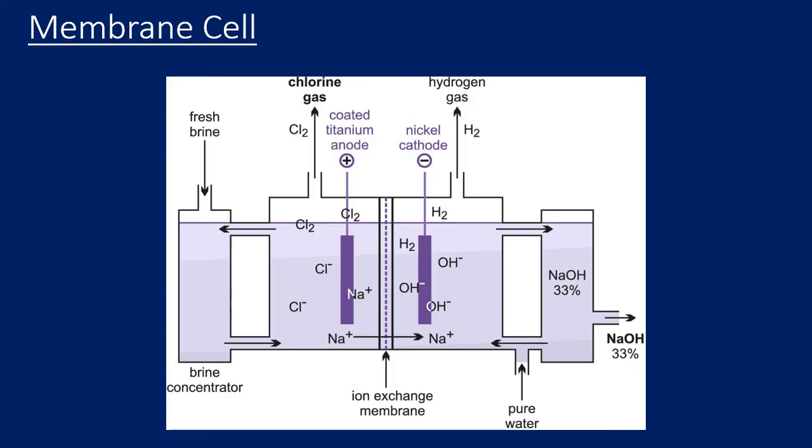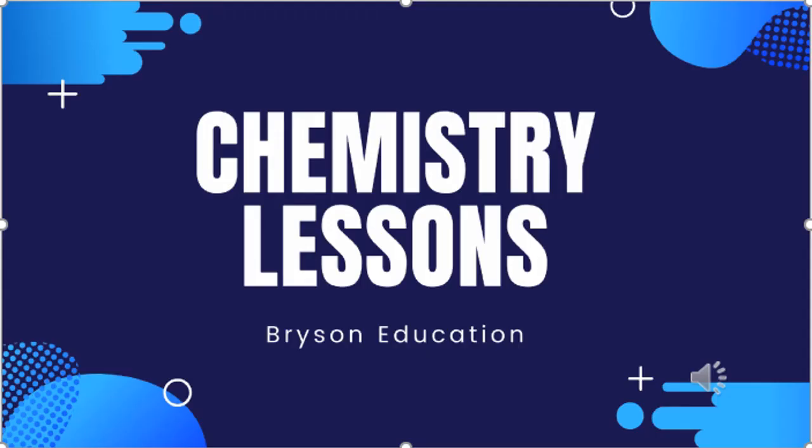At our anode and cathode, you can see the anode is chlorine gas just as it was before, and the cathode is hydrogen gas just as it was before. That's the end of this lesson. Please make sure you like and subscribe and look out for future videos.